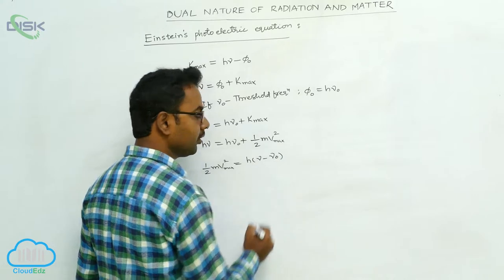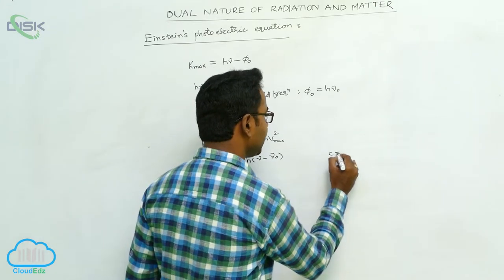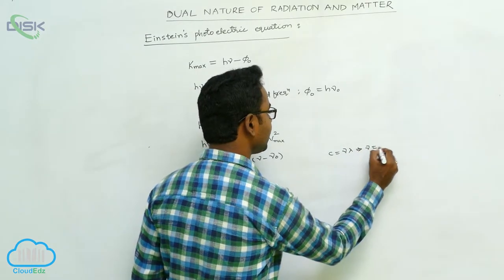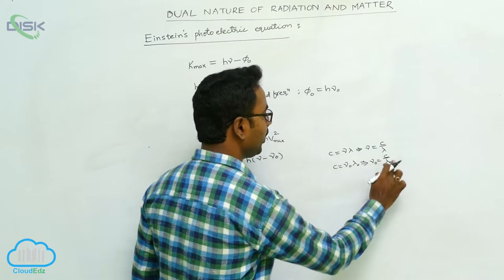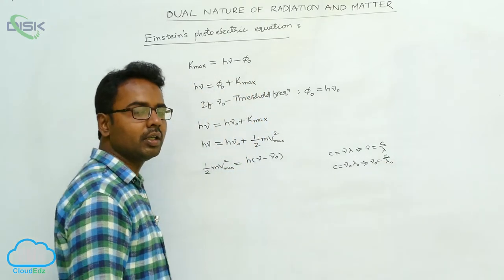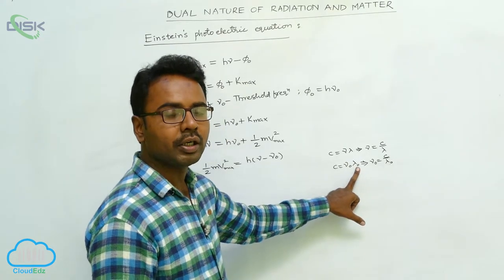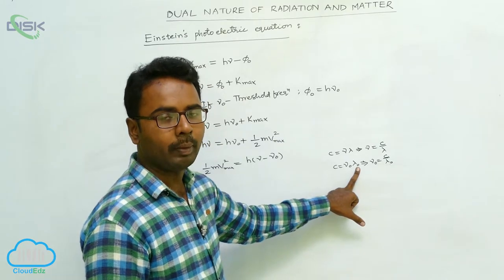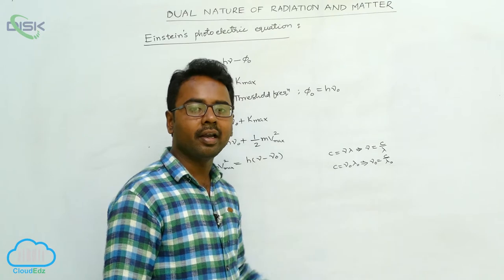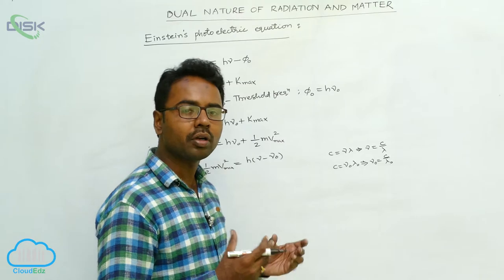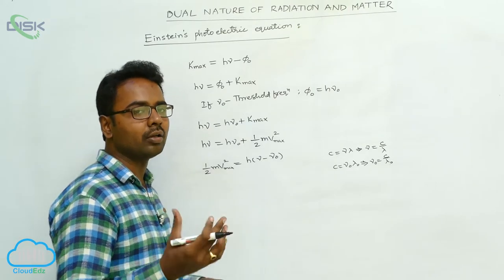Now we express ν and ν₀ in terms of wavelengths. Electromagnetic radiation propagates with the speed of light c, so c = νλ, which gives ν = c/λ; and c = ν₀λ₀, which gives ν₀ = c/λ₀. Here λ₀ is the threshold wavelength. If frequency is minimum, then wavelength is maximum — so the threshold frequency is the minimum frequency required for emission of electrons, and λ₀ is the maximum wavelength of incident radiation required for the emission of electrons.